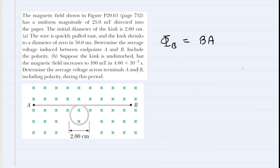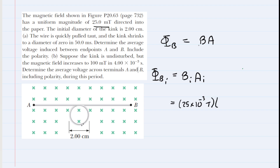Now let's look at the initial flux more carefully. The initial flux equals the initial magnetic field multiplied by the initial area. The initial magnetic field is given as 25 millitesla, so we multiply 25 by 10 to the minus 3 to get it into the standard unit of tesla. The area of this circular loop is pi times the initial radius squared. The initial diameter is given as 2 centimeters, so the initial radius is 1 centimeter, which divided by 100 gives 0.01 meters. So the area is pi times radius squared.